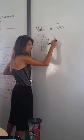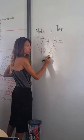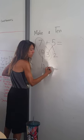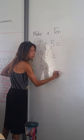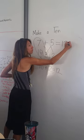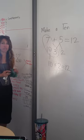They bring down the 10. They know out of 5, if you pull 3, there's 2 left. It's 10 and 2, which is the same as 12. And that is the make a 10 strategy.